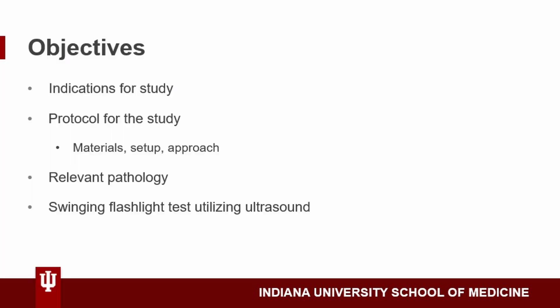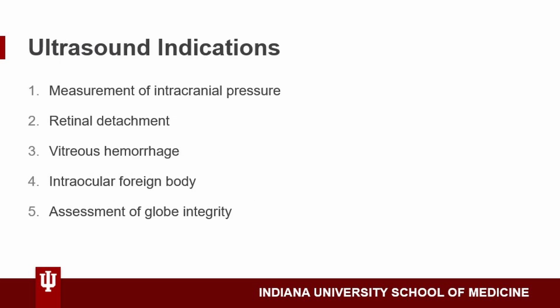Here's a list of some objectives for this video. We'll review some indications for ocular ultrasound in the clinic or emergency department and also run through the steps of how to set things up at the bedside. Ultrasound can be used quite effectively to assess intracranial pressure by measuring the optic nerve, as well as for obtaining a global image of the eye, such as in settings of suspected retinal detachment, vitreous hemorrhage, intraocular foreign body, or in the case of an open globe.